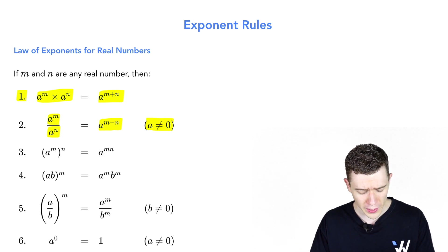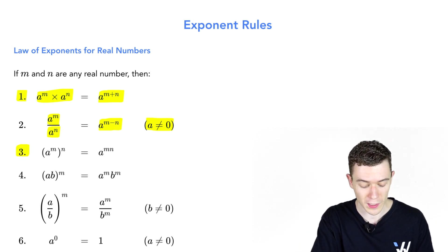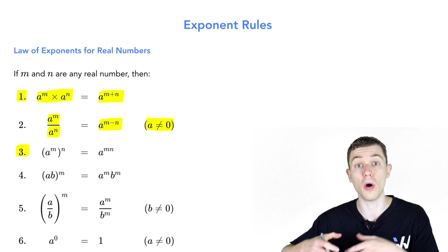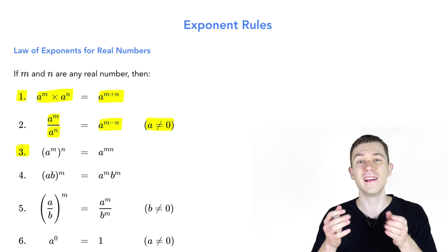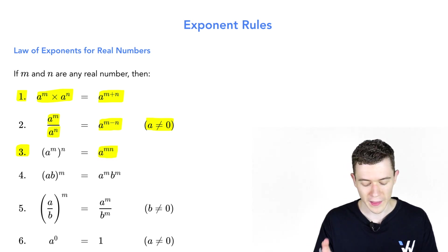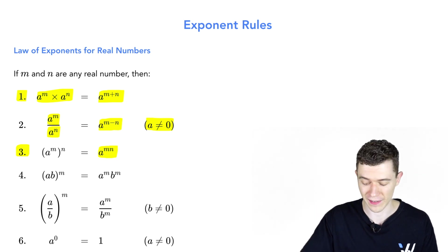Number three: when we have an exponent raised to an exponent — so we have a to the m, all to the power of n — we multiply those numbers. This turns into a to the m times n.